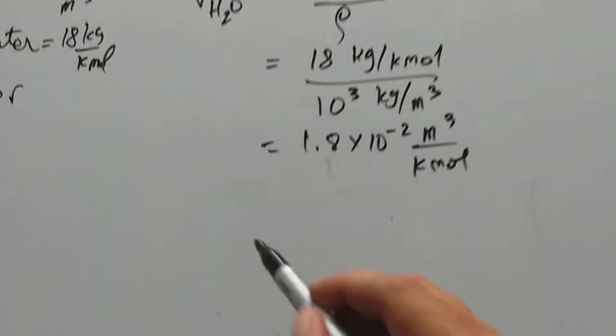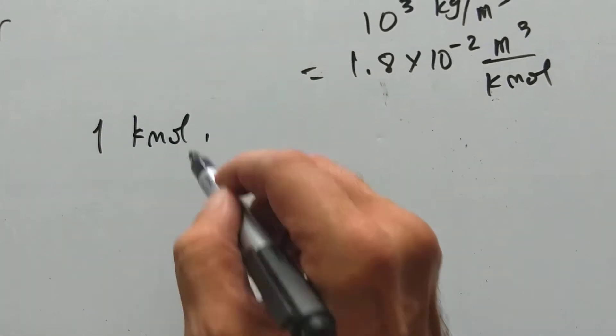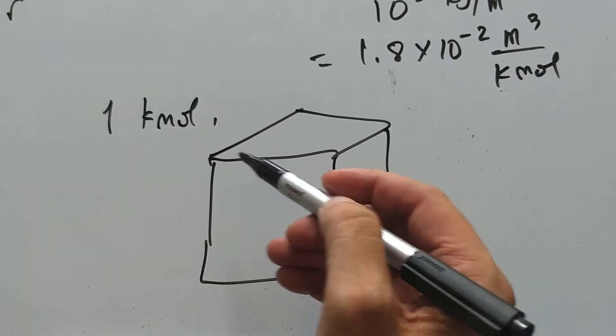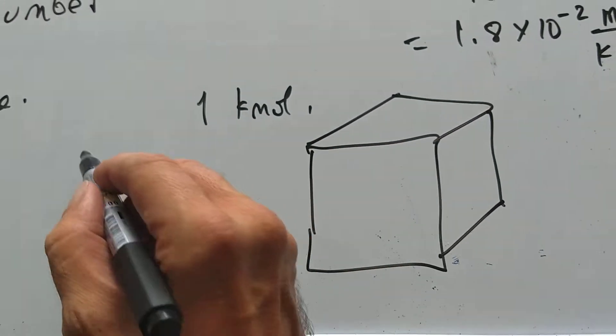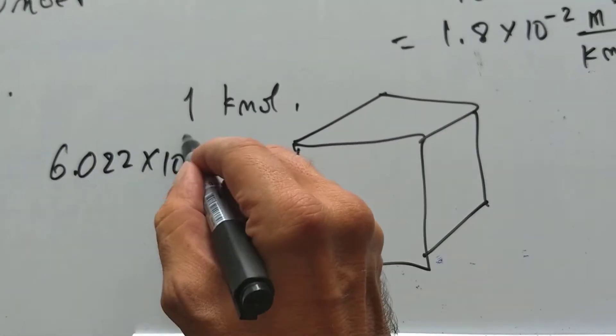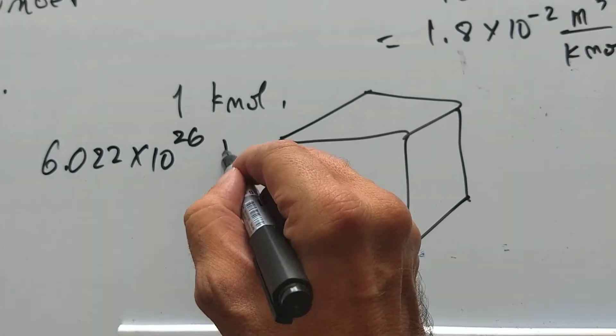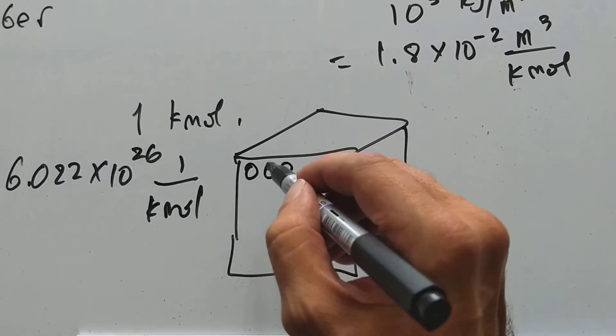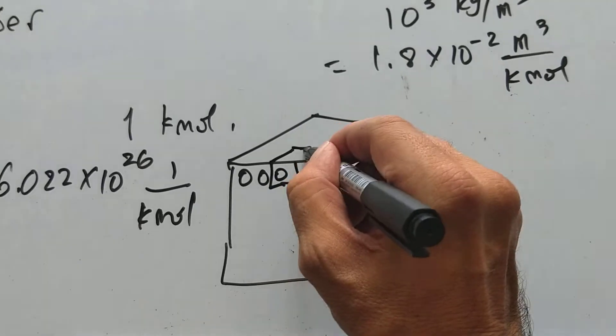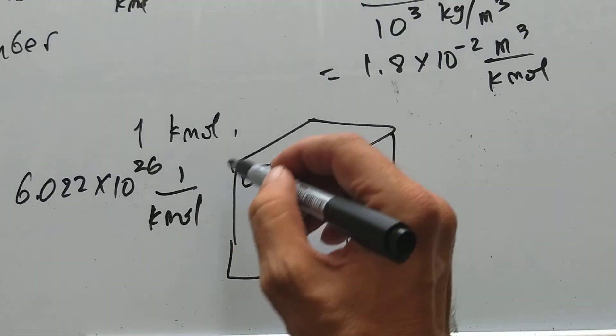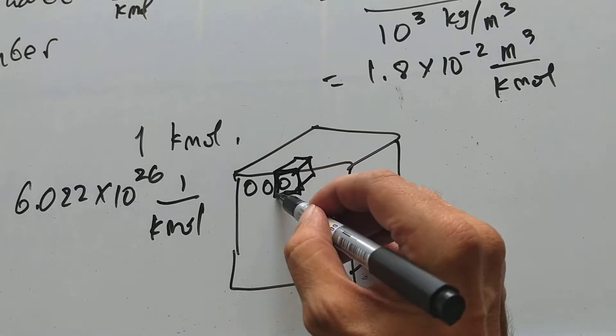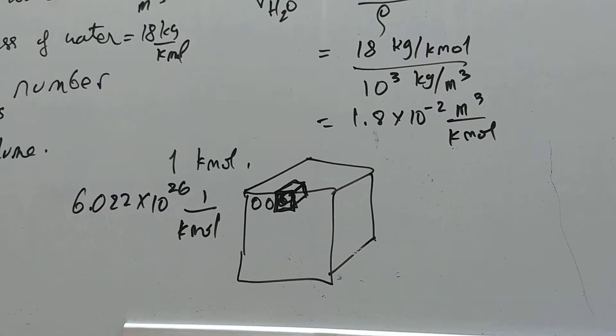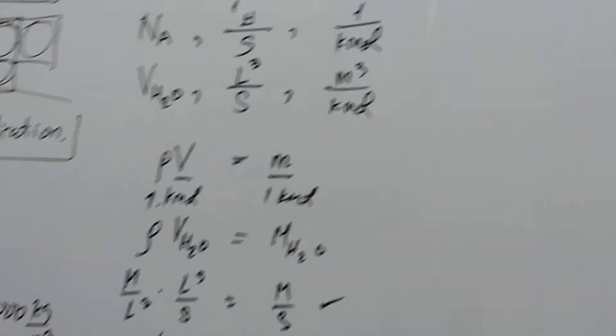Now, let's look at 1 kilomole. 1 kilomole of water is going to take up a certain volume. But we know how many molecules are in 1 kilomole. 6.022 times 10 to the 26 particles per kilomole. So, I know exactly how many water molecules are in there. If I divide this volume up, then this is going to be the volume taken up by one of my water molecules. Now, I'm getting close.